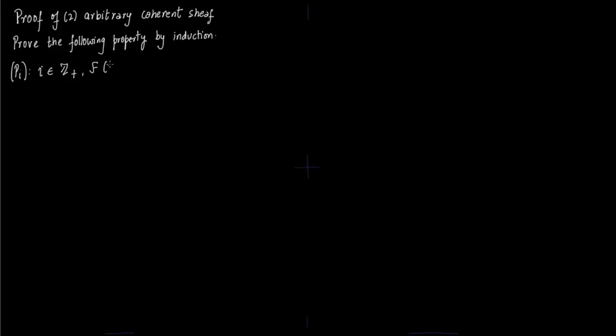Pi is: you fix i as a positive integer. Then for any coherent sheaf F, there is an integer n0 such that for any p greater or equal to i and d greater or equal to n0, the dimension of H^p(F(d)) is 0. This is the property we need to prove.